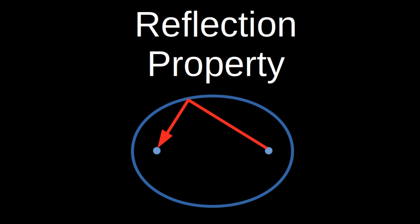If you roll a ball from one focus of an ellipse, it will always roll to the other focus after bouncing off the edge.